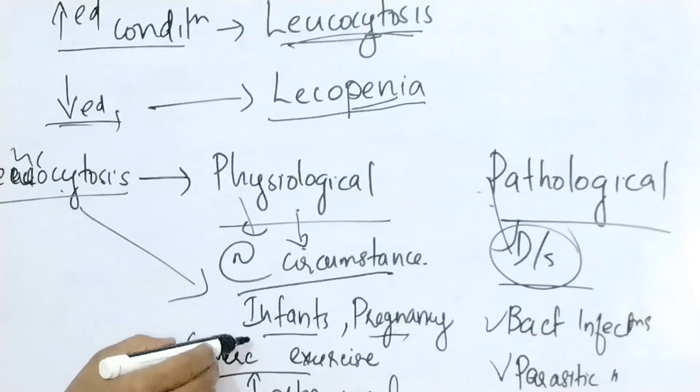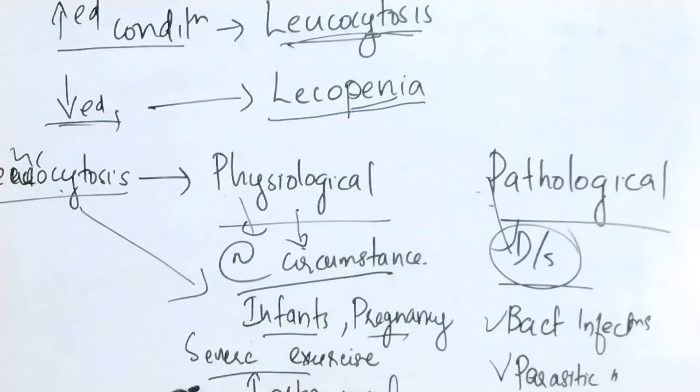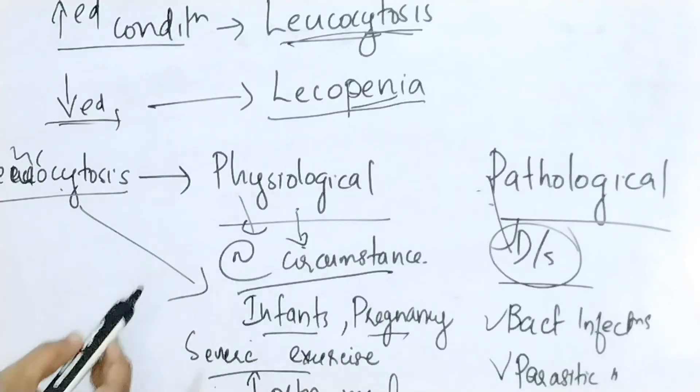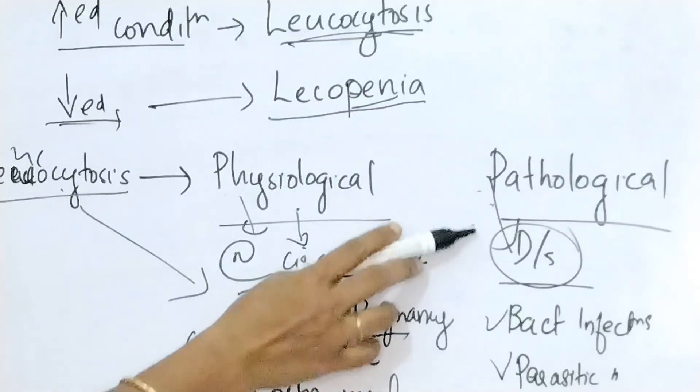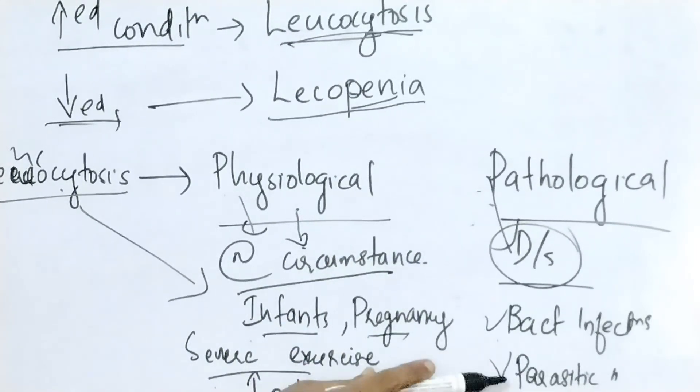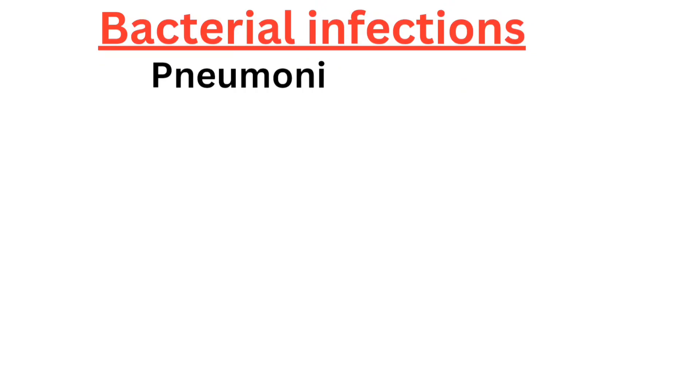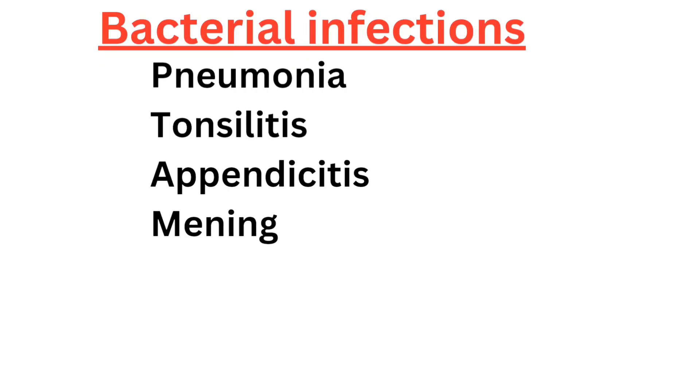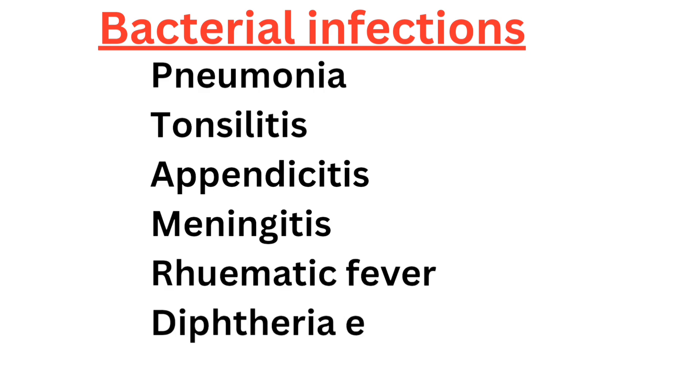And physiological increase, that is physiological leukocytosis, can be seen in infants, in pregnancy, severe muscular exercise and pathological increase is seen in some bacterial and viral infections. Bacterial infections are pneumonia, tonsillitis, appendicitis, meningitis, rheumatic fever, diphtheria, etc.